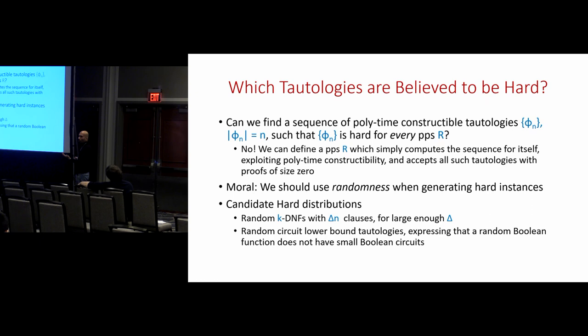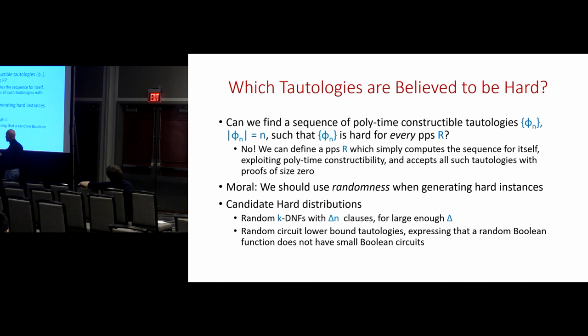Another candidate hard distribution is random circuit lower bound tautologies. Take a random Boolean function f — a random string of length 2^n interpreted as a truth table — and formulate a tautology saying that this Boolean function doesn't have small Boolean circuits. That's going to hold with very high probability since a random Boolean function indeed doesn't have small circuits, and from experience proving circuit lower bounds isn't easy, so this seems like another reasonable candidate.